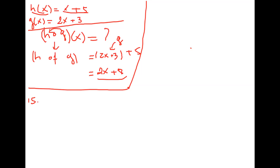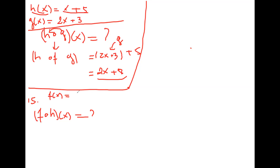This time we need to find f of h. What functions do we need to find f of h? We need f and h — obviously. f is given in the problem: f(x) = x squared plus four.